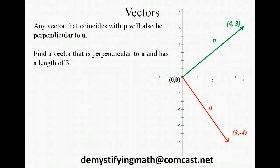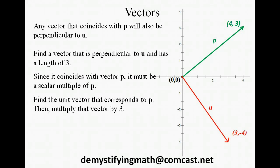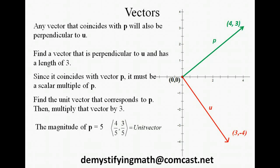Any vector that coincides with the vector we just found will also be perpendicular to vector u. So let's use that information to help us find a vector that's perpendicular to u and has a length of 3. Since it must coincide with vector p, it must be a scalar multiple of vector p. Let's start by finding our unit vector — the unit vector corresponds with vector p but has a length of 1. Vector p has a length of 5, so all we have to do to find the unit vector is divide our coordinates by 5. Then we're going to multiply the unit vector by 3 to get a magnitude of 3.